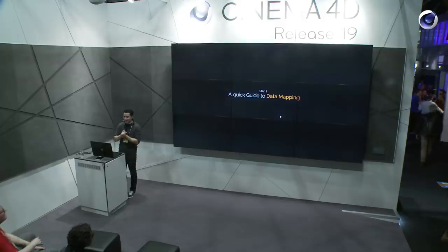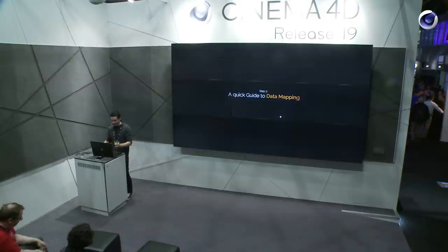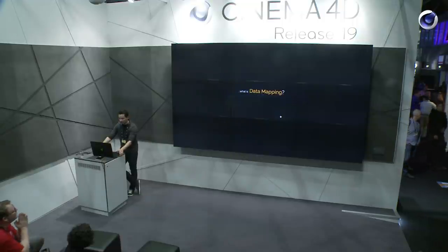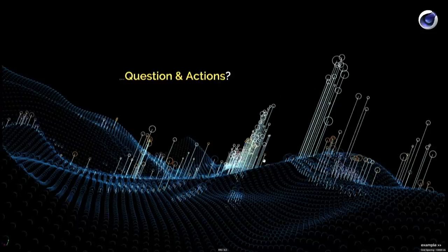The next step is using all this data for intelligent-looking particles with data mapping. Data mapping is similar to questions and actions, which is basically a control system in X-Particles that you used to need expressions or coding for. Now we have a very simple system to create dependencies between particles.